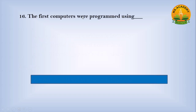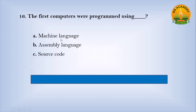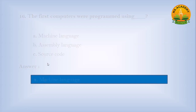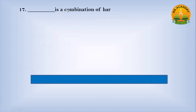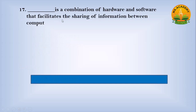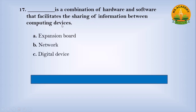The first computer was programmed using dash. Option A Machine language, option B Assembly language, option C Source code. Answer: A. Number Machine language. Dash is a combination of hardware and software that facilitates the sharing of information between computing devices. Option A Expansion board, option B Network, option C Digital device. Answer: B. Number Network.